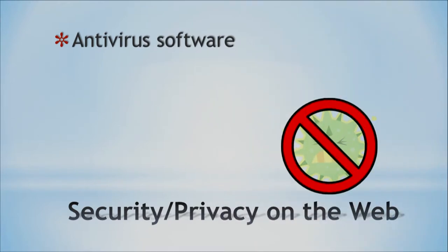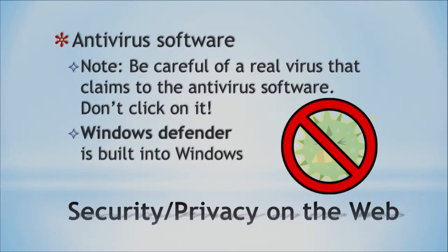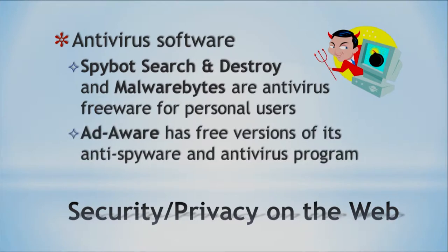Let's talk a little more about antivirus software. Be careful — a real virus might claim to be antivirus software, so make sure you know what your antivirus software looks like and don't click on that. One antivirus option is Windows Defender, which is built into Windows — make sure it's on. Some free options include Spybot Search and Destroy, Malwarebytes, and Adware. These are good for personal users.